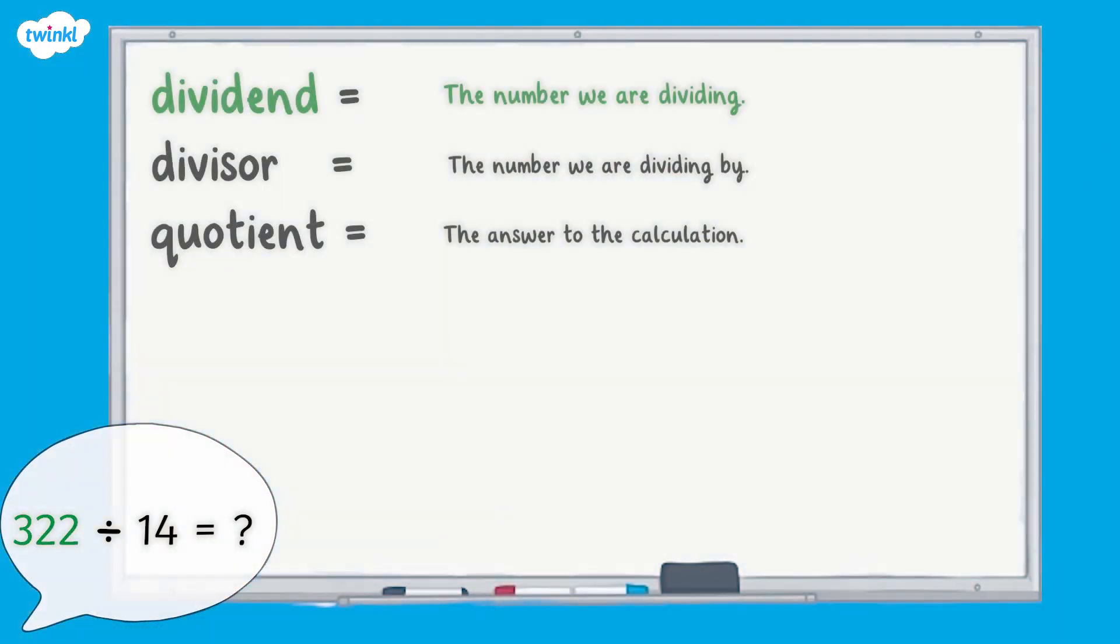Let's have a go at dividing 322 by 14. The dividend or number we are dividing is 322. We are dividing by 14, so 14 is our divisor, and the quotient will be the answer to the calculation.